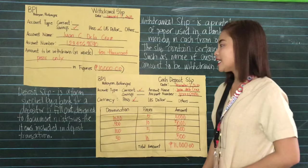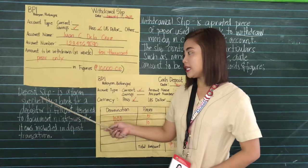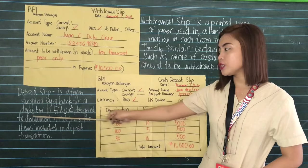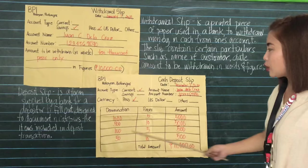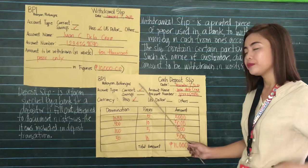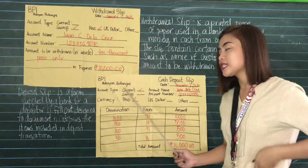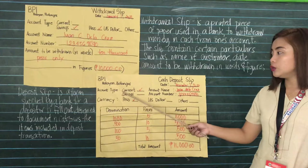Now let us proceed to the deposit slip. A deposit slip is a form supplied by a bank for a depositor to fill out, designed to document and categorize the items included in a deposit transaction. Here is an example of a cash deposit slip. Indicated in the upper left corner is the date that the transaction is being processed.